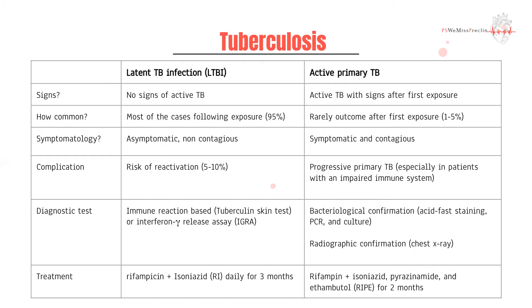When you suspect latent TB or TB in general, you can do tests such as the tuberculin test, the Mantoux test, or the interferon gamma release assay. These tests are good at telling you whether your body has ever developed an immune response to TB. What these tests don't tell us is whether it's active or latent, primary or secondary — all they indicate is that your body at some point came into contact with high enough levels of TB. If you want to assess whether a person has active TB, you need to do bacteriological-based tests, not immune-based tests.